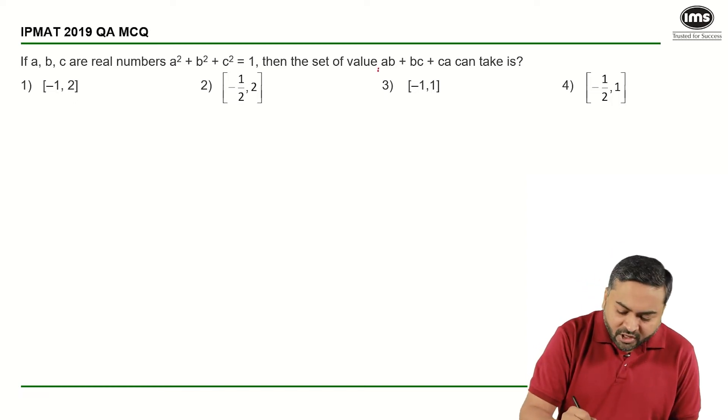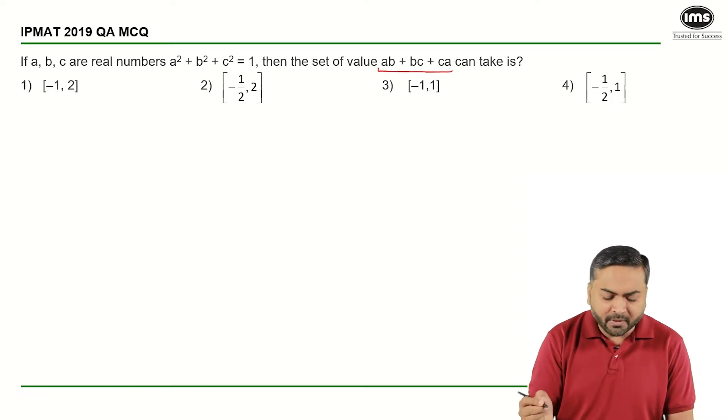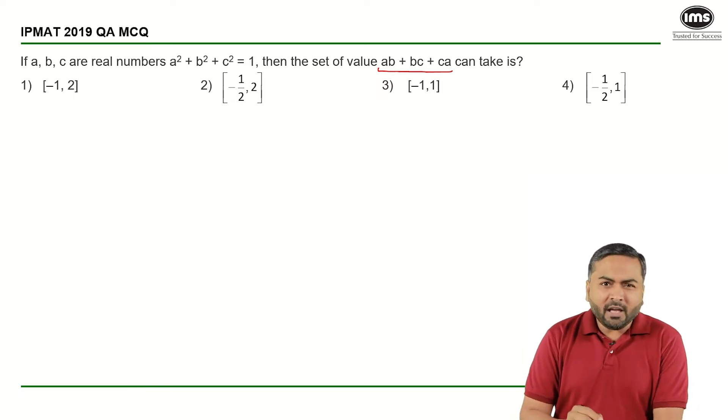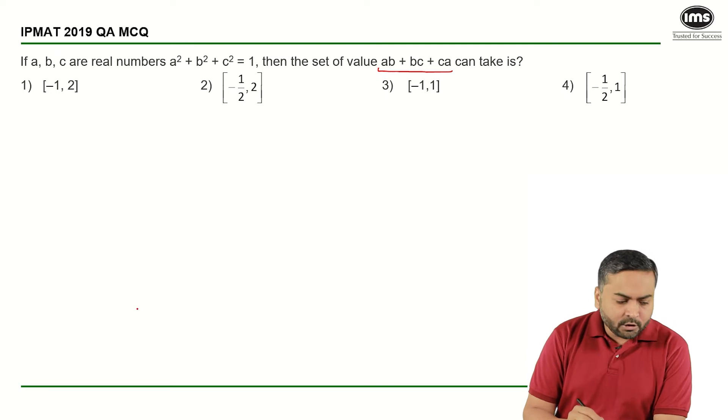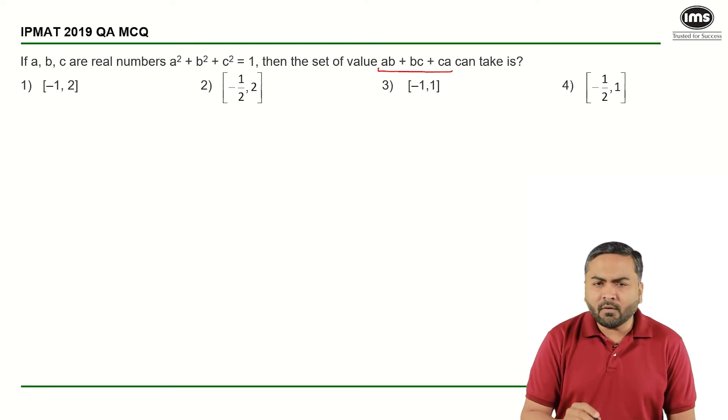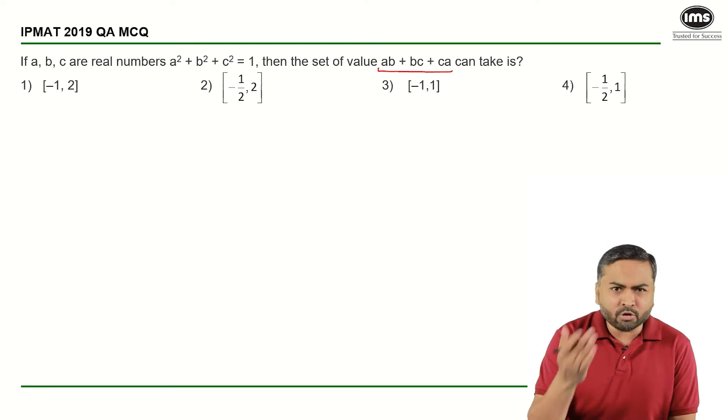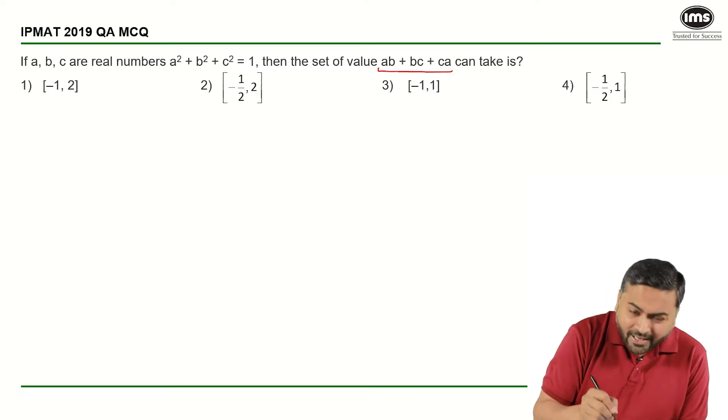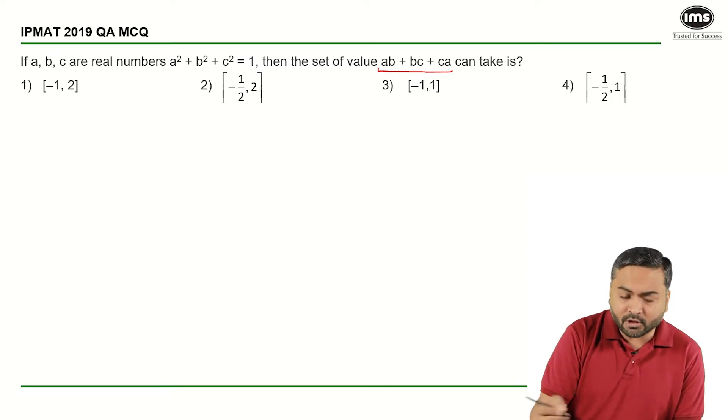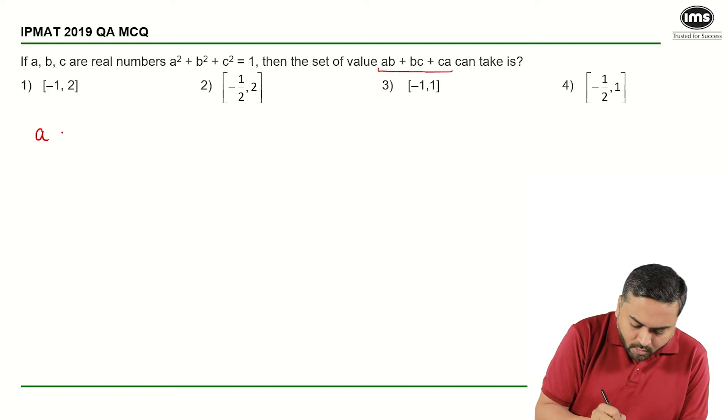Basically I need to find out the range for the given expression. The moment I look at A² + B² + C² = 1, the first thing that clicks me is how can I get this A² + B² + C² = 1. One of the identities that I know is (A + B + C)².